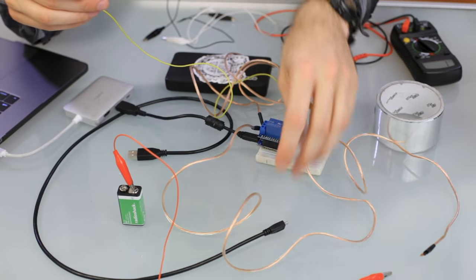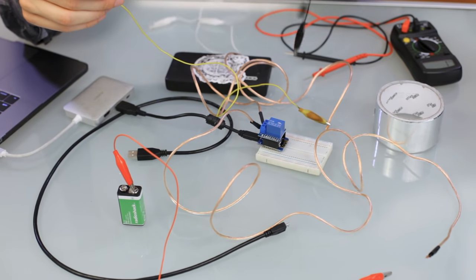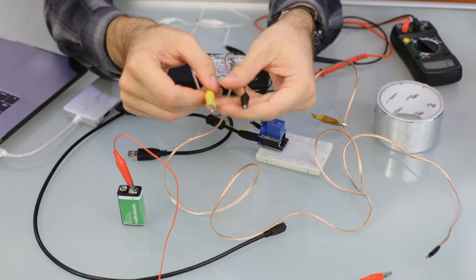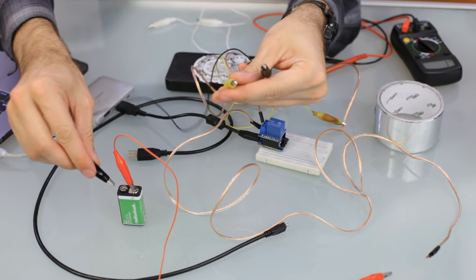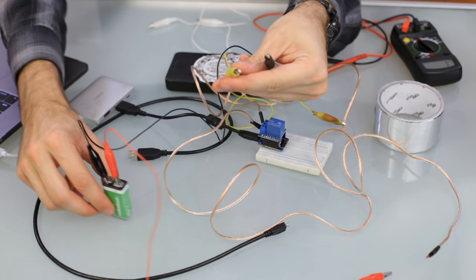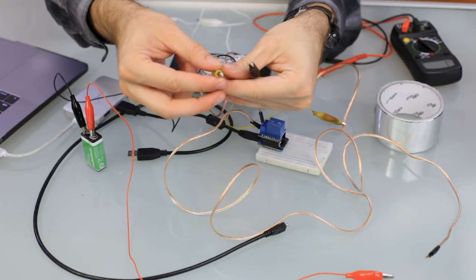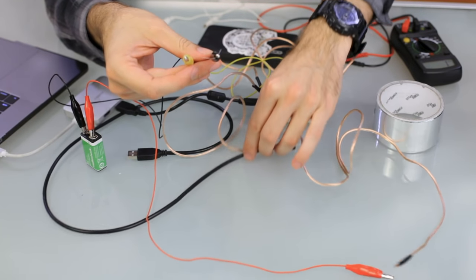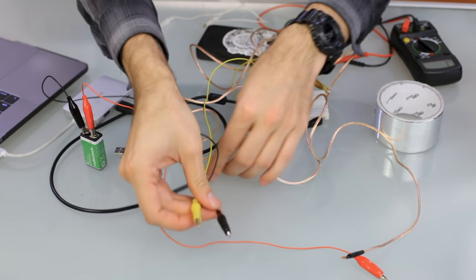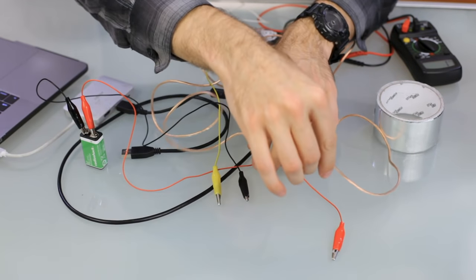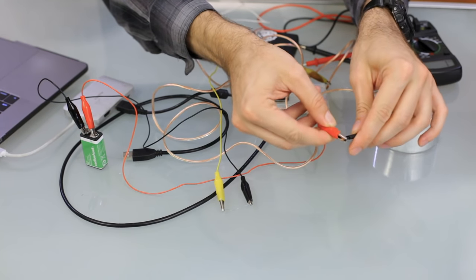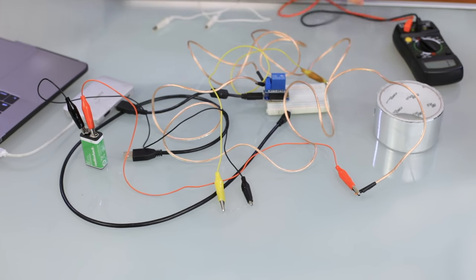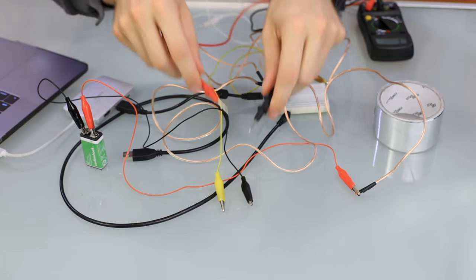The last step is connecting via one final alligator clip the other side of the nichrome wire and attaching that to the battery. Now we've completed the circuit and the only thing holding the electricity back from pulsing through this wire is the relay right here. We need to first clear this stuff off so we have a good space to test this out. Then we'll put this up in front of the camera, and last I'll connect to this power.